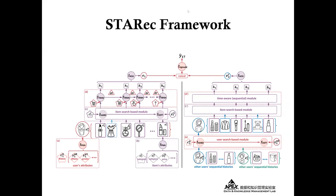Now I will show an overview framework of our model's design. As shown in the figure, our model can be divided into three modules: an object modeling module for processing inputs of both items and users, a search-based module for searching useful information, and a time-aware module for extracting sequence patterns. Next, I will describe each module specifically.